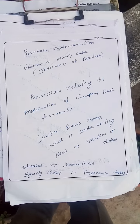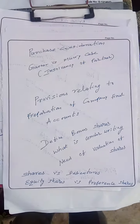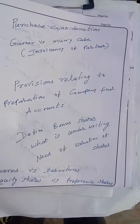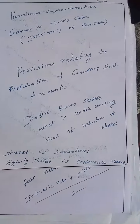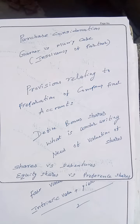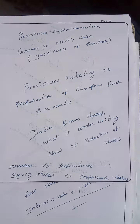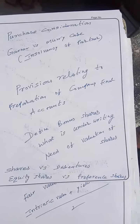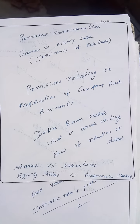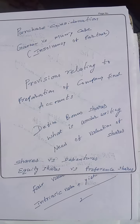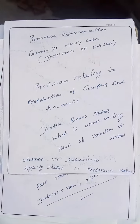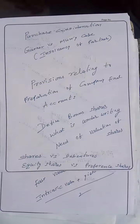The Garner versus Murray case applies in insolvency of a partner. Provisions related to preparation of company final accounts are in unit number four. In most cases, you need to write the proforma of the balance sheet and the proforma of the P&L account.